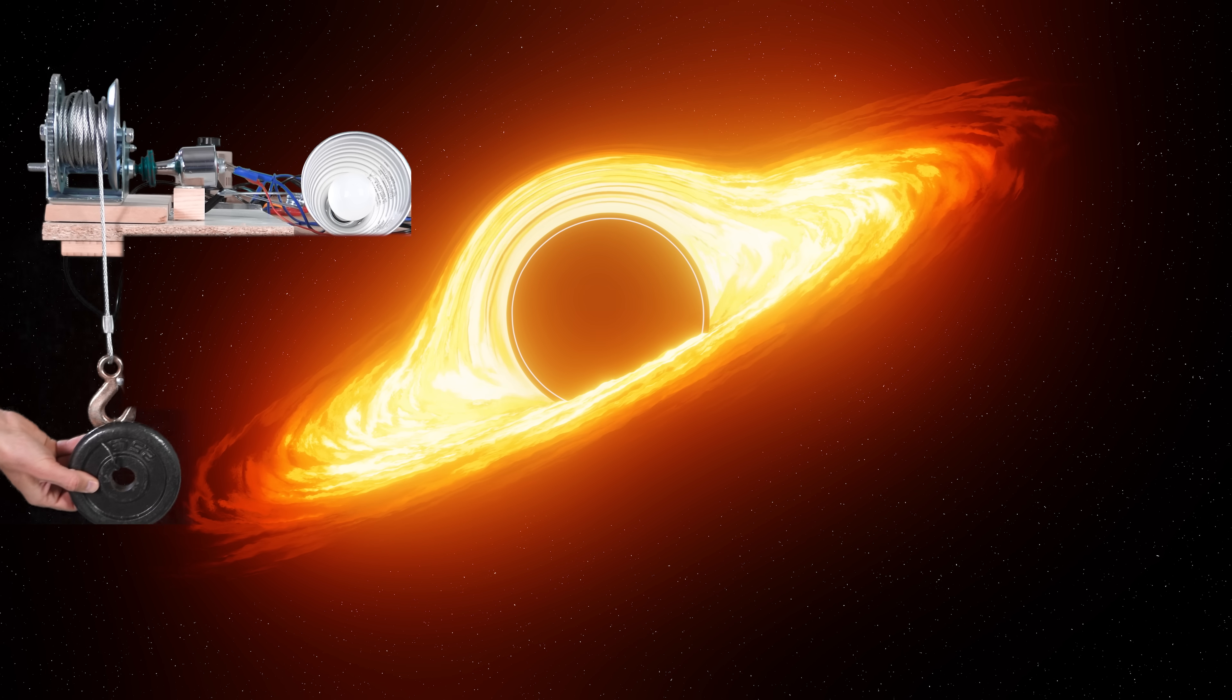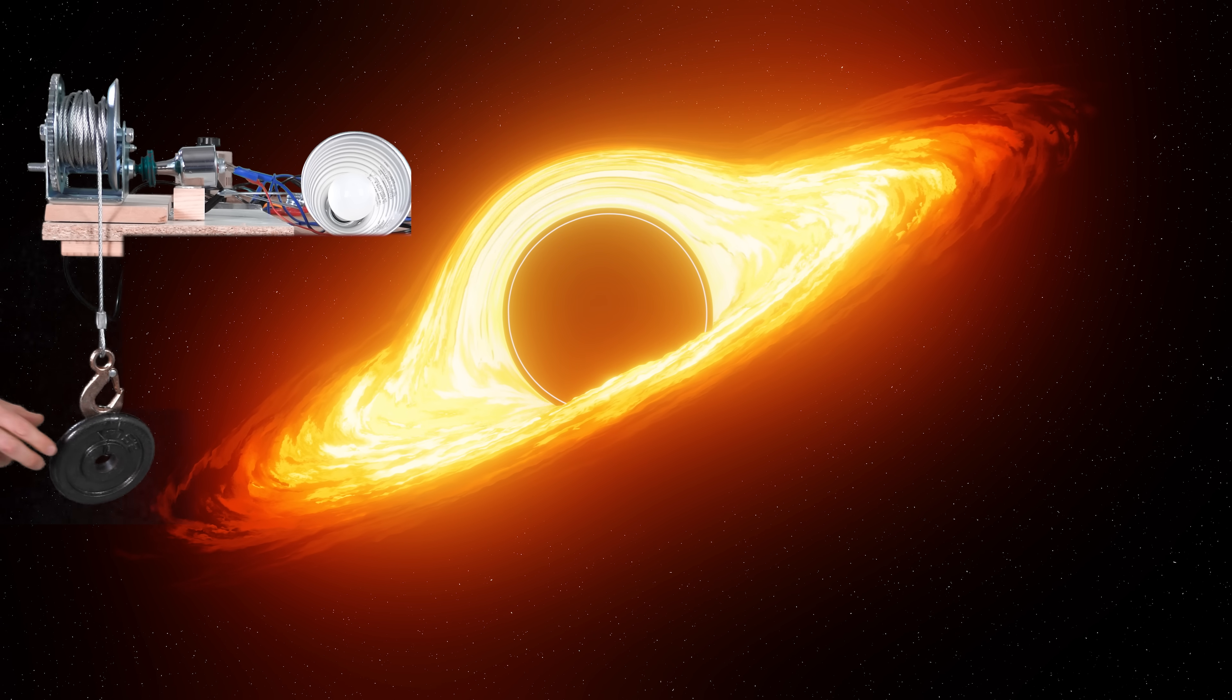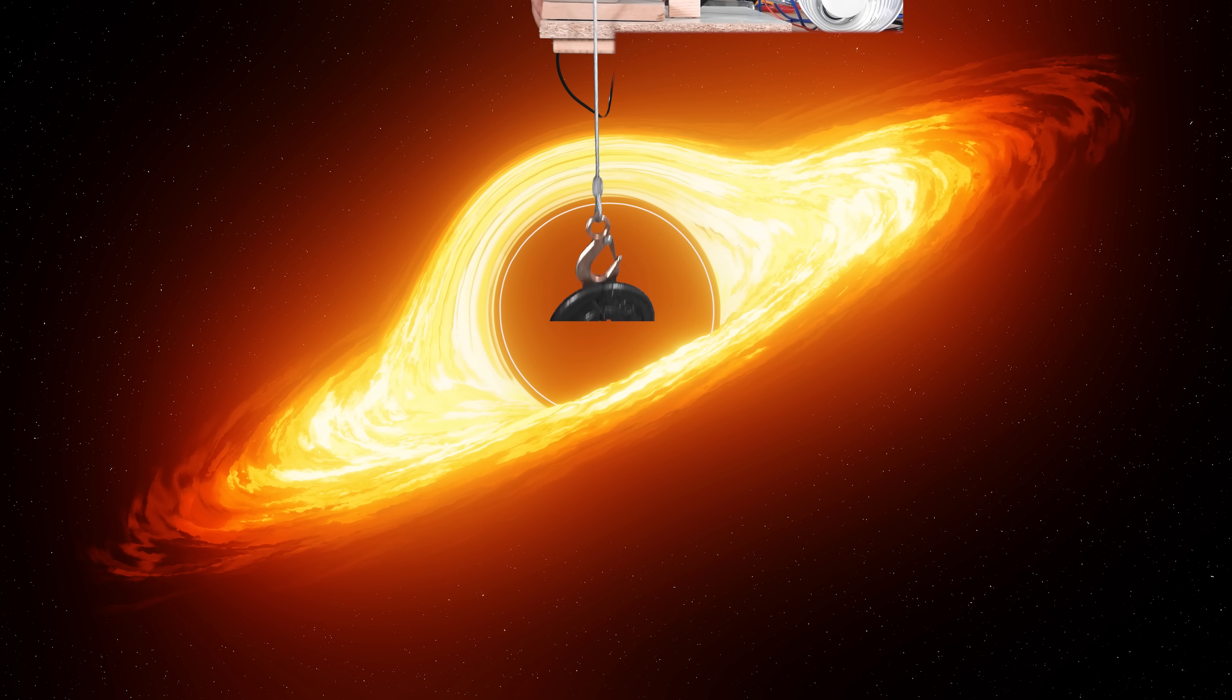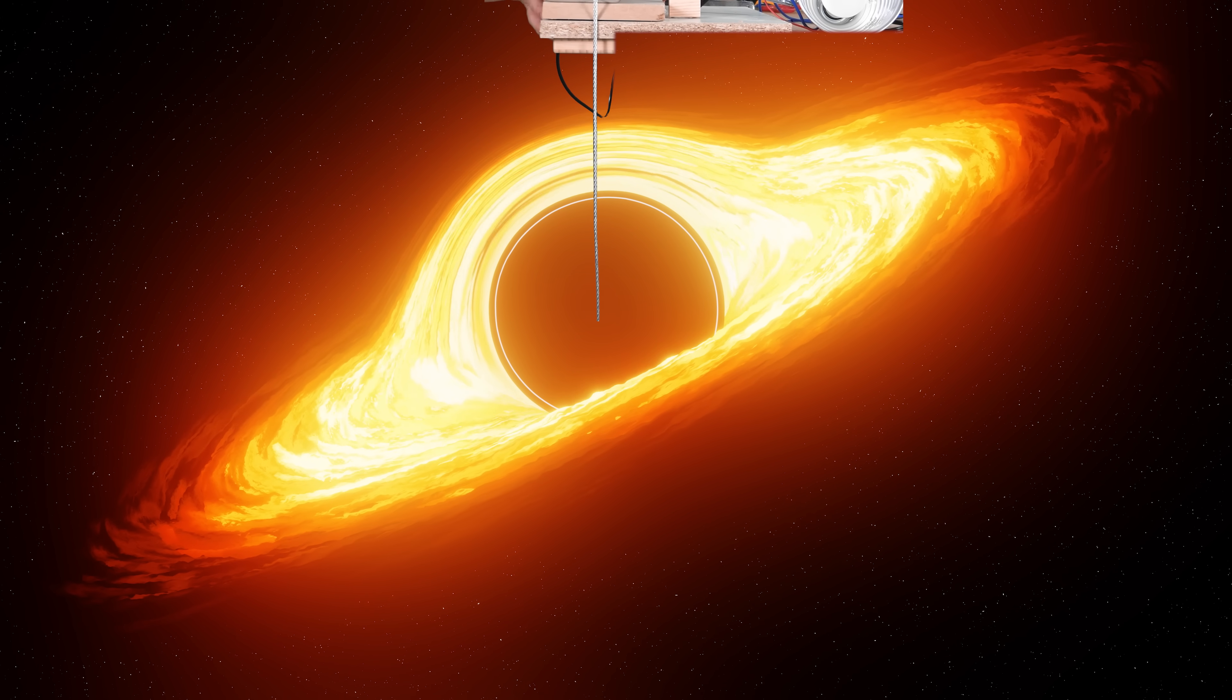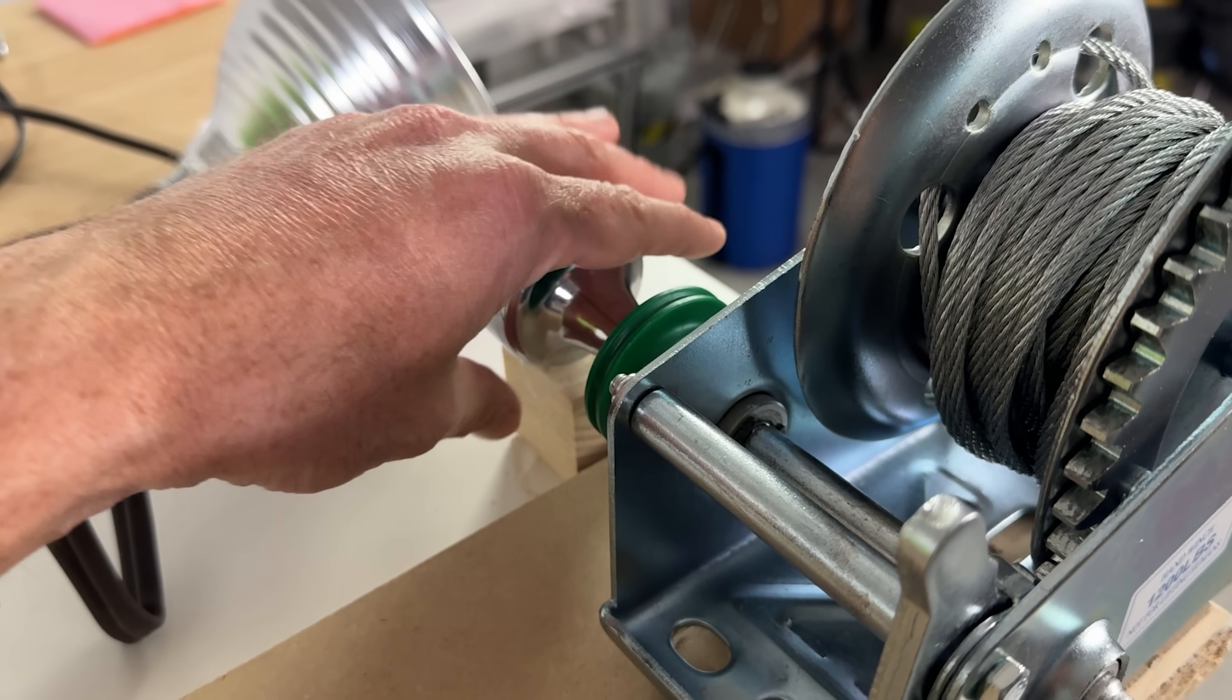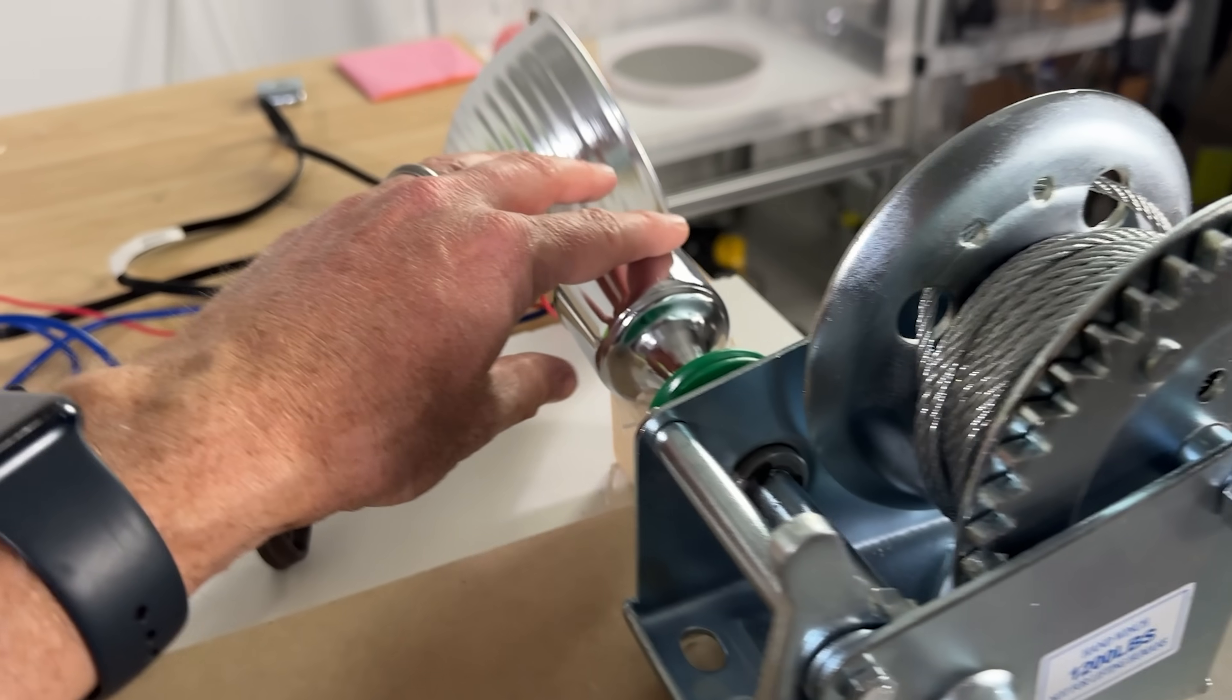I attach this one kilogram weight to the winch and hook up my winch to a generator. So as I lower the weight into the black hole, it'll turn the generator and I can get some energy out of it. So if I let this free fall, the only thing slowing it down will be the generator. So by slowing it down, we're creating an energy source.